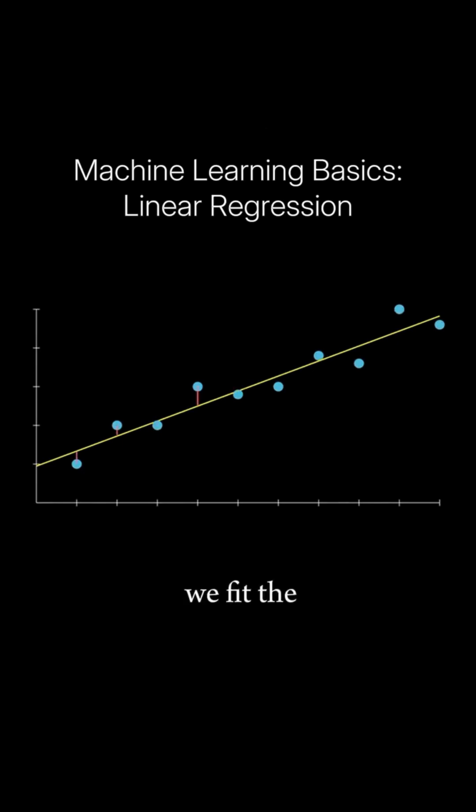So how do we fit the line to these points? Well you'll notice that there's these differences between the points and the line. These little red segments, these are called residuals. They are the differences between the data points and the predictions the line would produce.